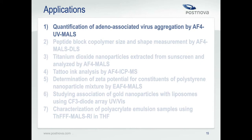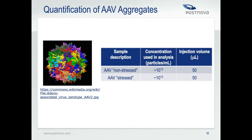Now we get to the applications. The first application is quantification of adeno-associated virus aggregation by AF4-MALS. Adeno-associated viruses, or AAVs, are increasingly used for gene therapy due to their versatility and safety. They can be loaded with DNA or RNA and delivered to a specific cell type with the goal of treating or curing disease. One of the biggest concerns for manufacturing a uniform AAV suspension is the presence of viral aggregates, which can create problems with transduction efficiency, bio-distribution, and immunogenicity.